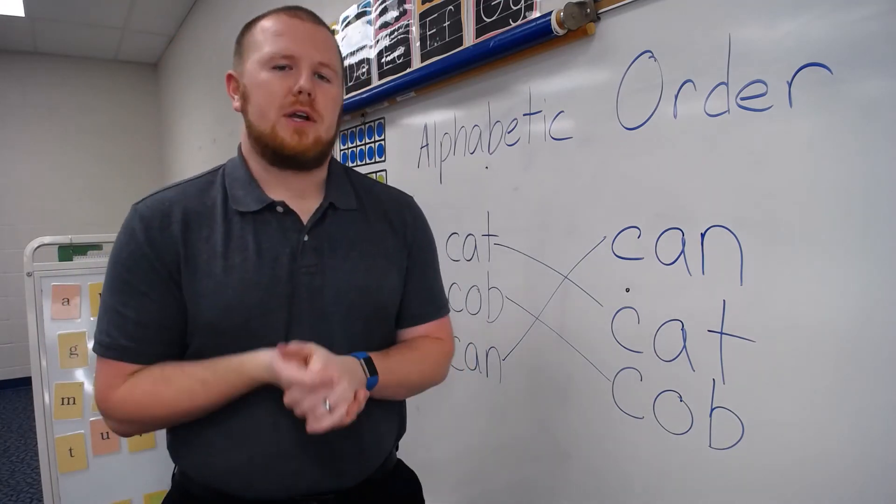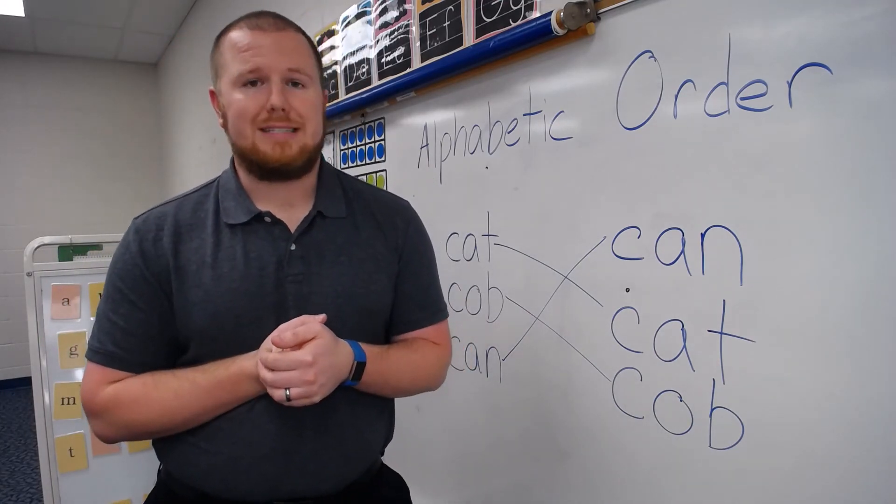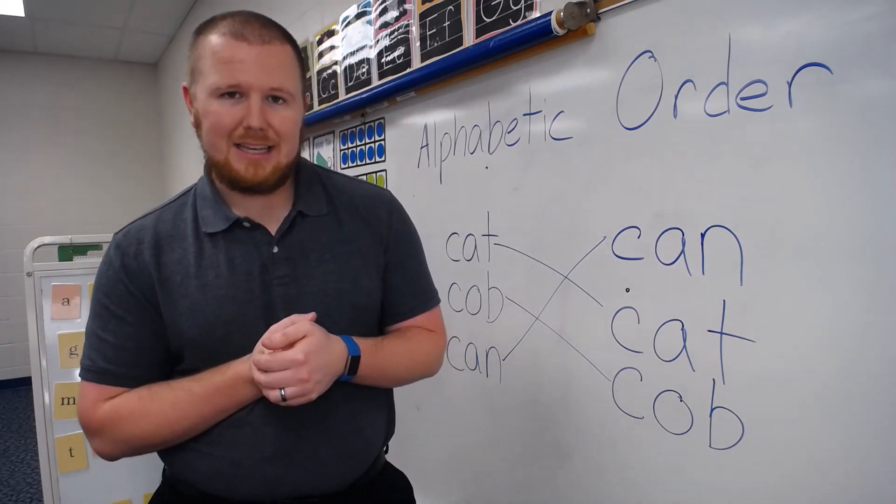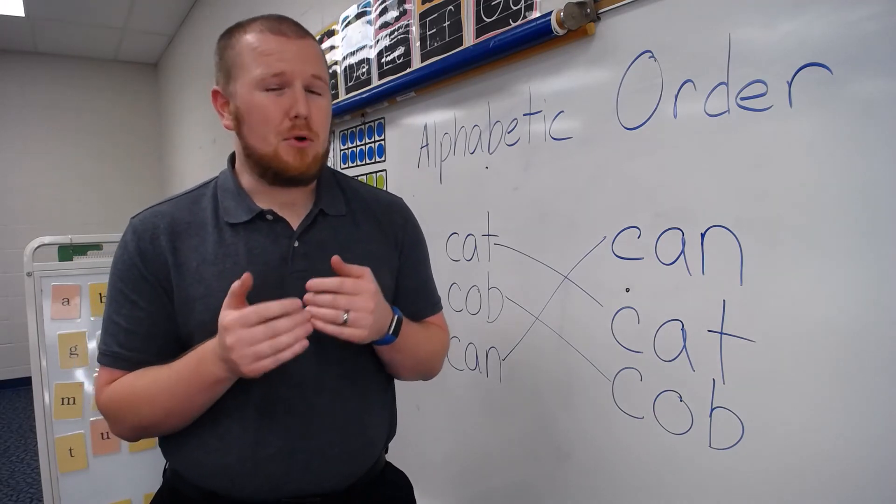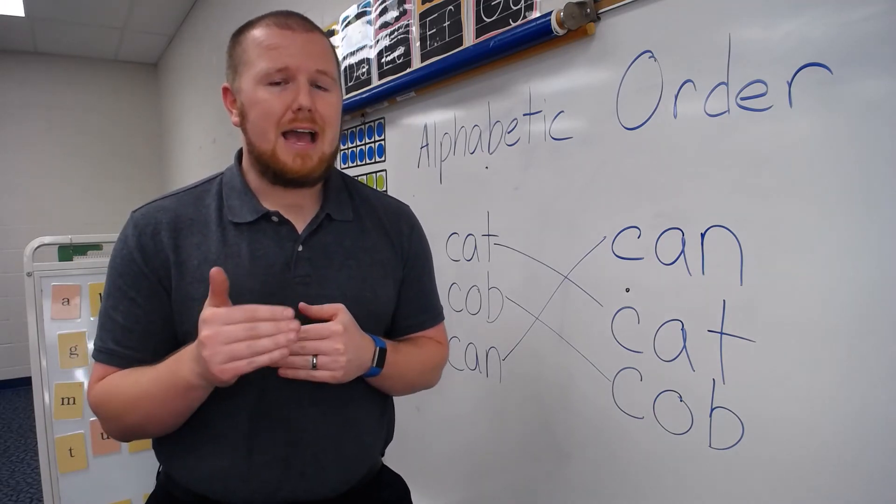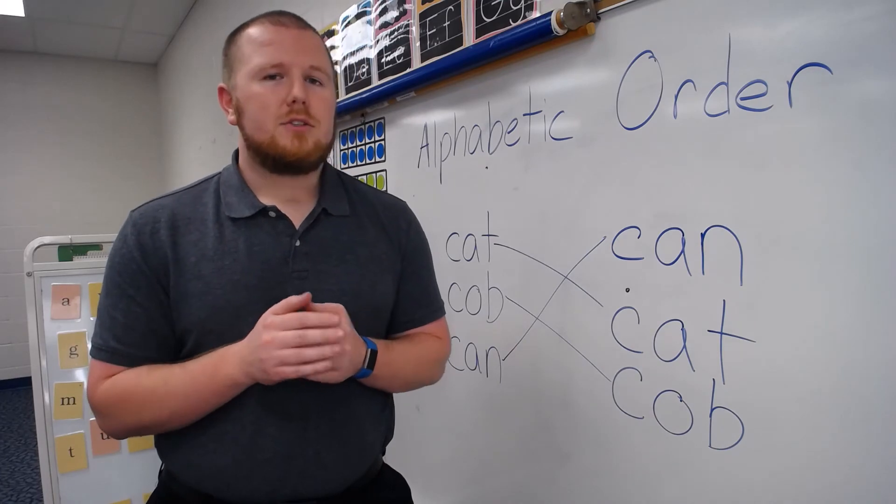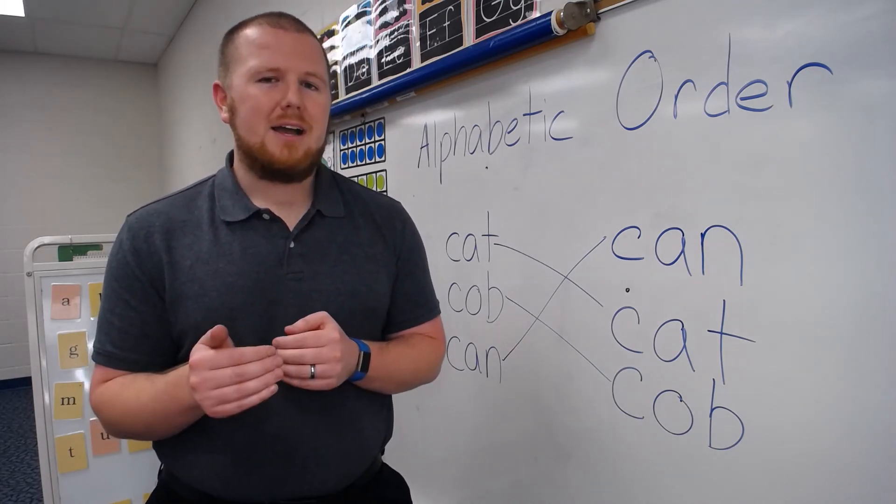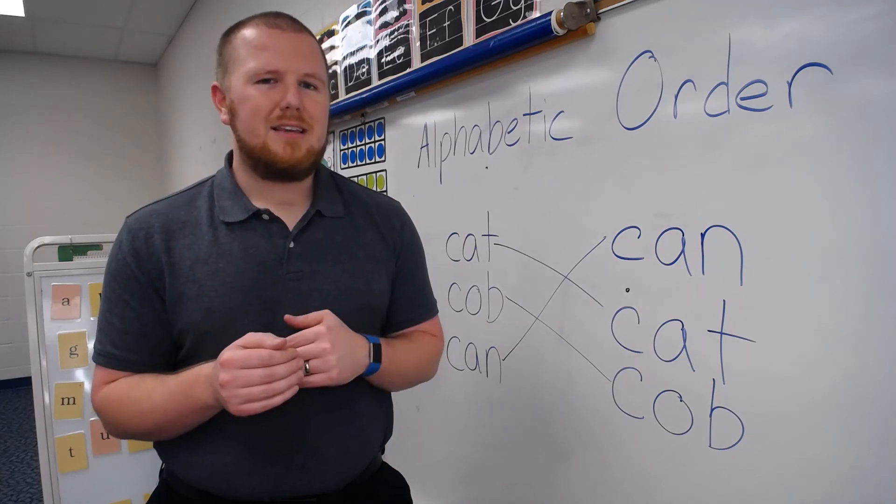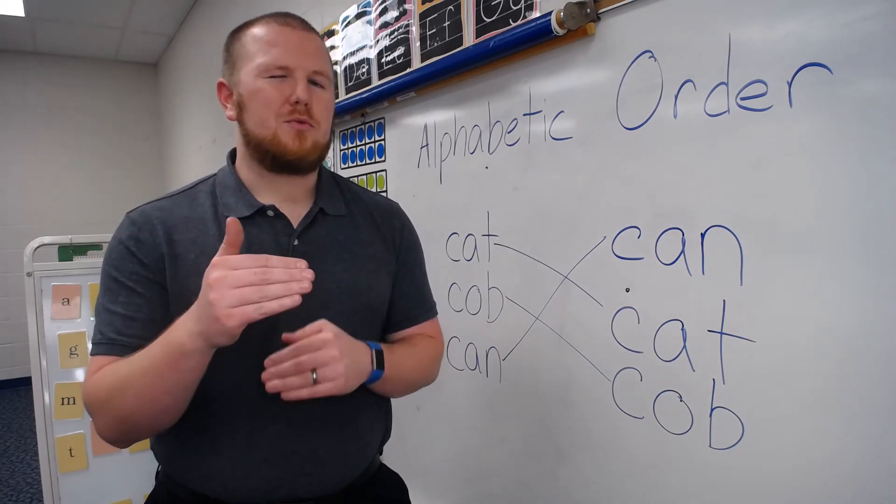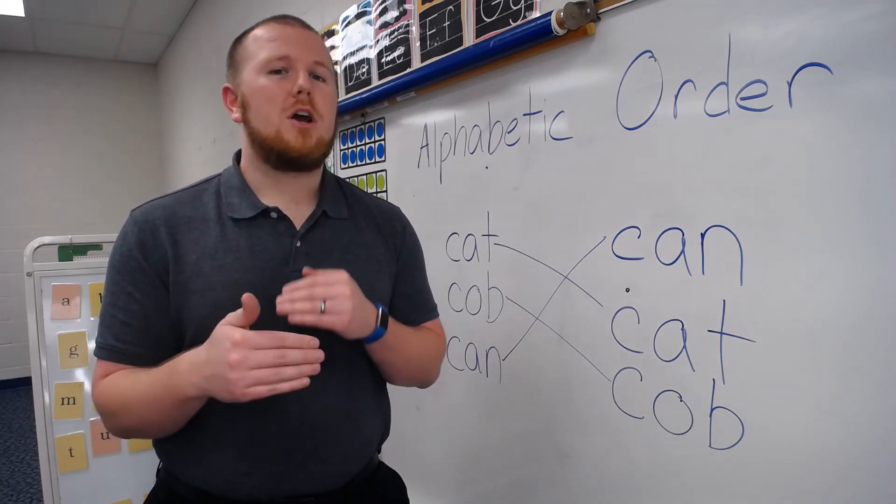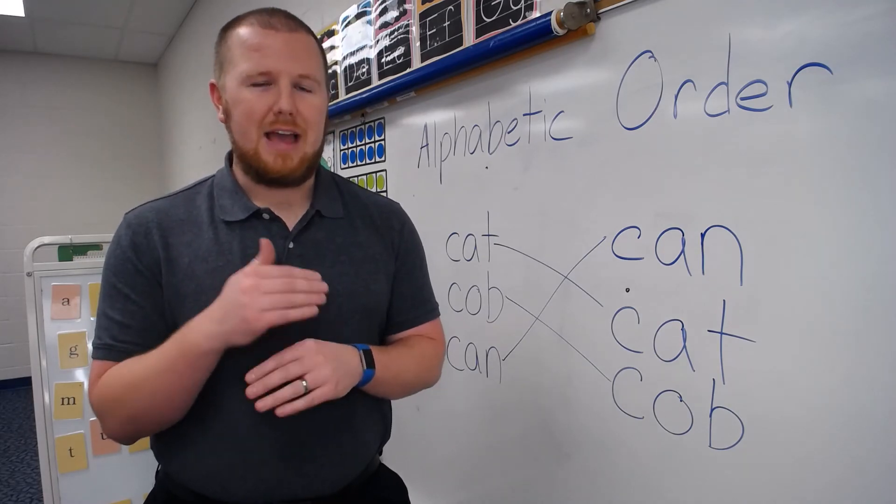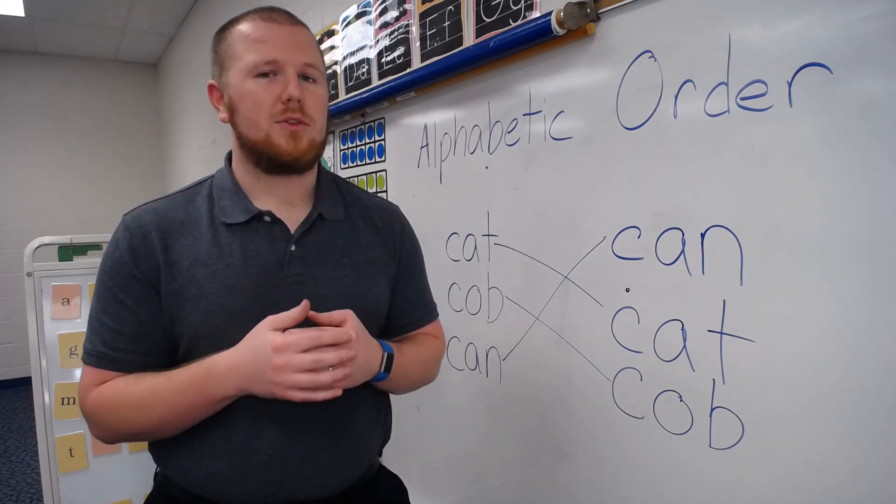So if you had two friends in your class and say their names were Zach and Zeke, you can actually see they both start with Z, Z, A, C, and Zeke. So we'd have to move on to the next letter. And the next sound we hear is Z, A, A, Z, E, E. So A comes before E. So Zach would come before Zeke alphabetically, even though they both start with the same letter.